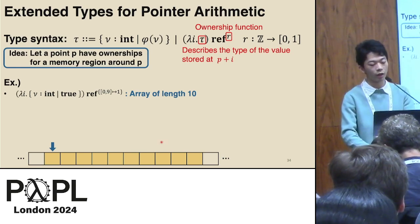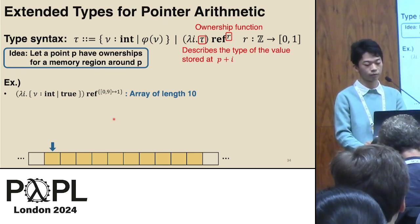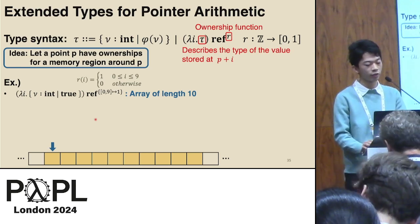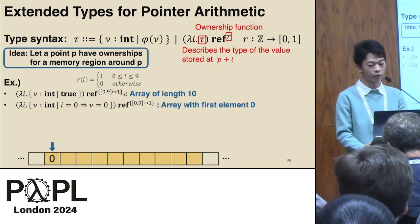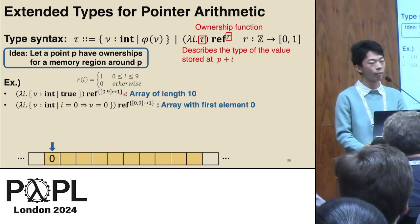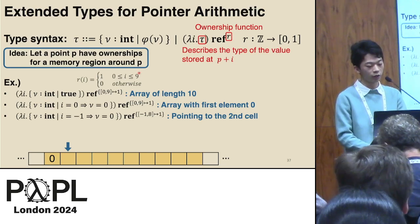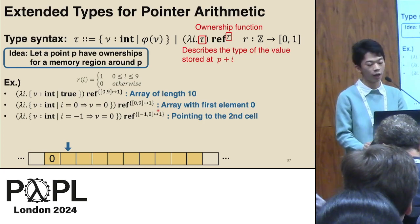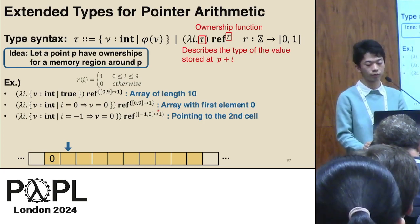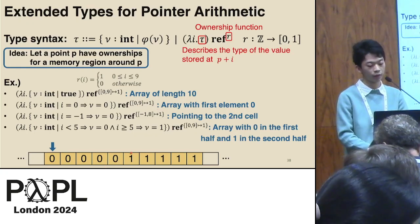Let's take a look at examples. This is the type of a pointer which refers to the head of an array of length 10. This is the type of a pointer which refers to the head of an array with first element 0. This is the type of a pointer which refers to the second cell of the array, where a refinement describes the value in the cell 1 cell before the one referred to by the pointer, and the ownership function has ownership from index minus 1 to 8. This is the type of a pointer referring to the head of an array with 0 in the first half and 1 in the second half.